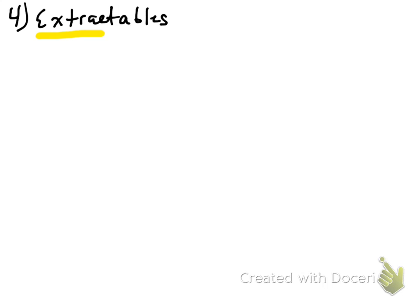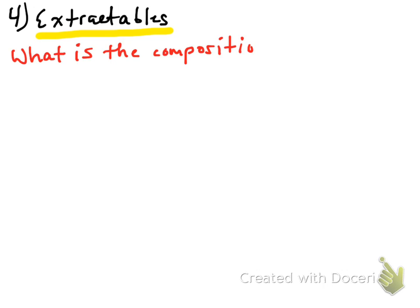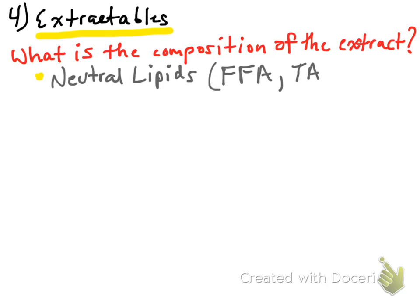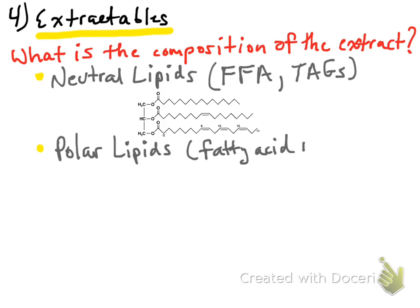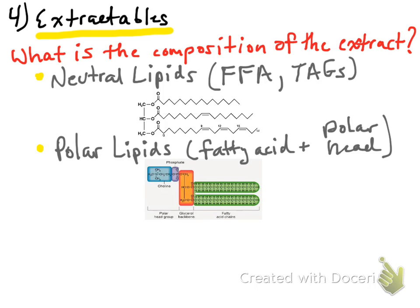Now let's look at the extractables — the term given to what we're extracting. There are many different classes. The first is neutral lipids, meaning they are not charged: free fatty acids or TAGs (triacylglycerides). A TAG has a glycerol head group with three long-chain esters. Secondly, we have polar lipids — generally fatty acids plus a polar head group, such as phosphatidylcholine, which is a classic polar lipid.